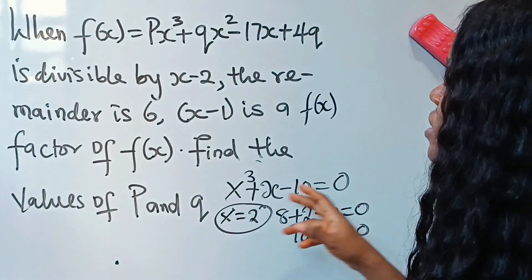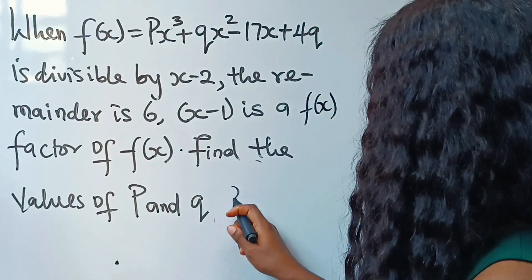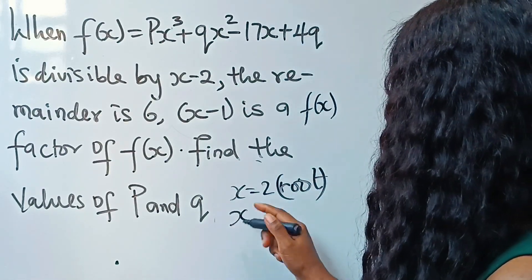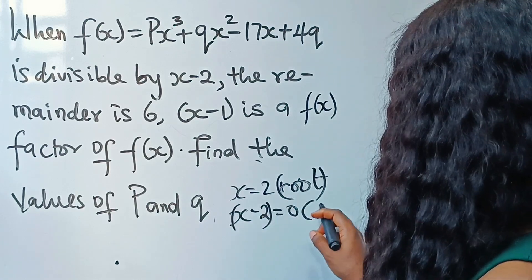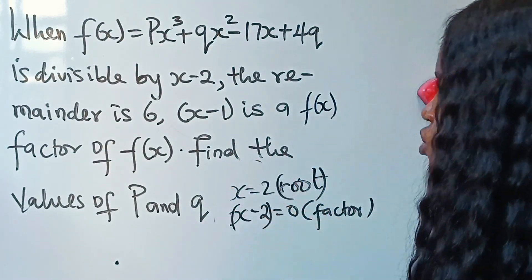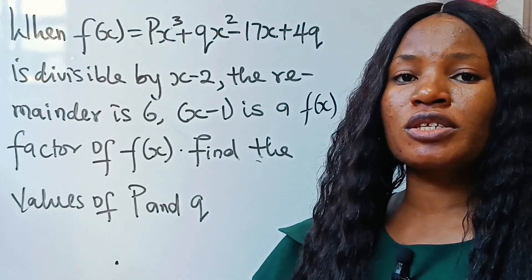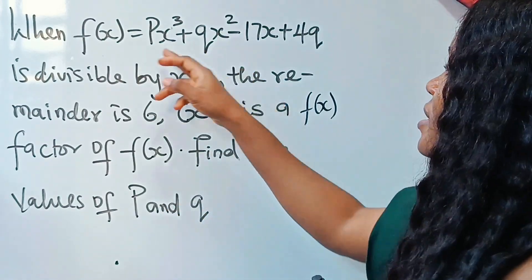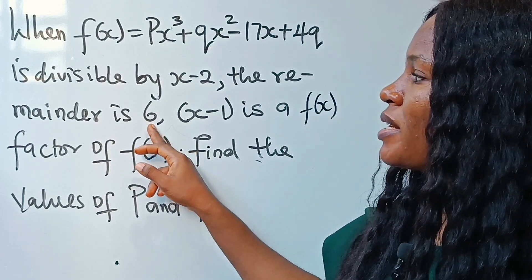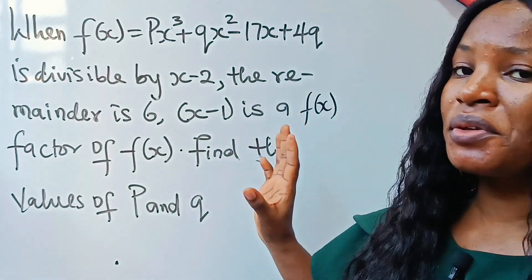You can see that when I substituted two into this equation I got zero, so that simply means that two is a root of this cubic polynomial. If x equals two is a root, then x minus two is a factor — these are two different things. When you substitute a value into your polynomial and it is not equal to zero, that means there is a remainder, and that particular number is not a root.